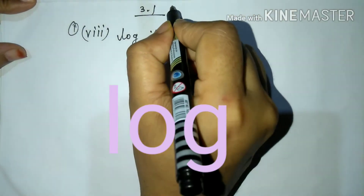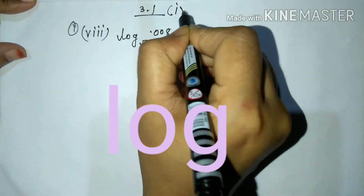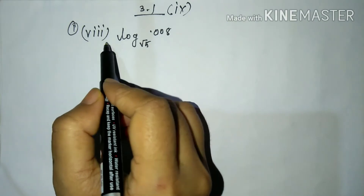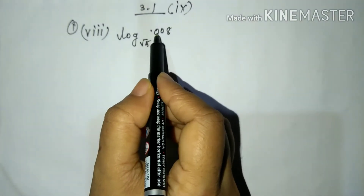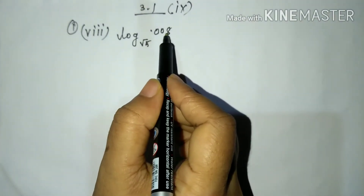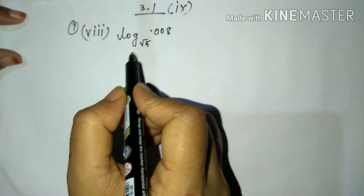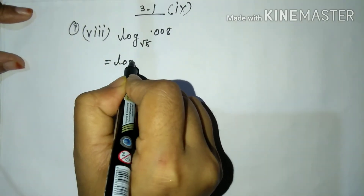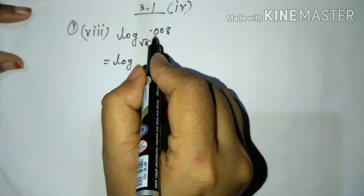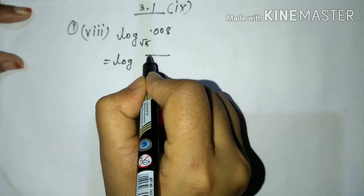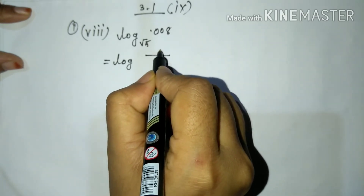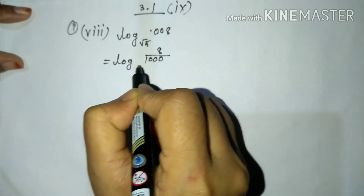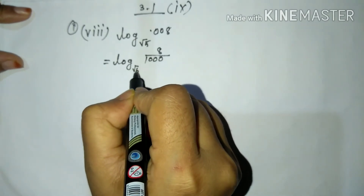3.11 plus 9 plus 3.11 plus log .008 to the base root 5. This is equal to 5. The first step: log .008 to the base root 5 is equal to log 8 by 1000 to the base root 5.